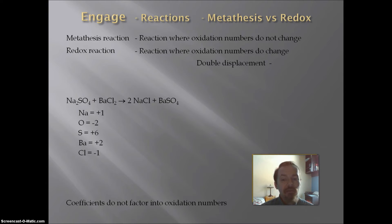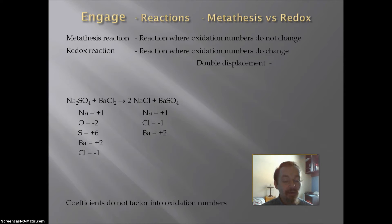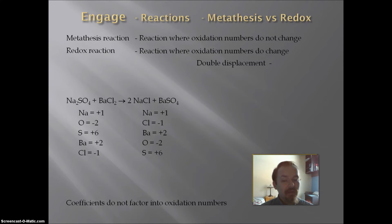In the sodium chloride product, sodium is a monatomic ion with a charge of plus 1, so its oxidation number is plus 1. Chloride is a monatomic ion with a charge of minus 1, so its oxidation number is minus 1. Barium in barium sulfate is a monatomic ion with a charge of plus 2, so its oxidation number is plus 2. Oxygen in the compound is minus 2, so barium at plus 2 and 4 oxygens at minus 8 means sulfur must be plus 6.